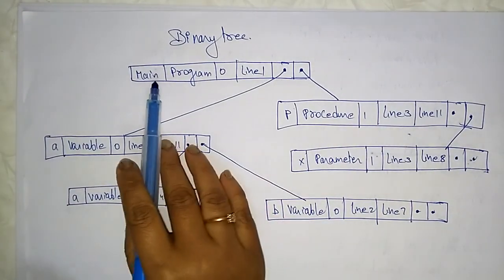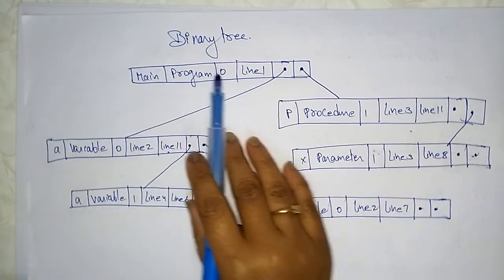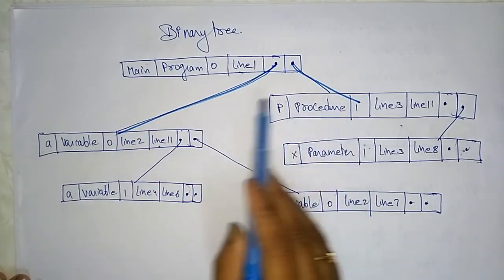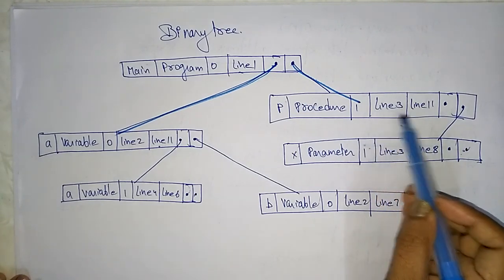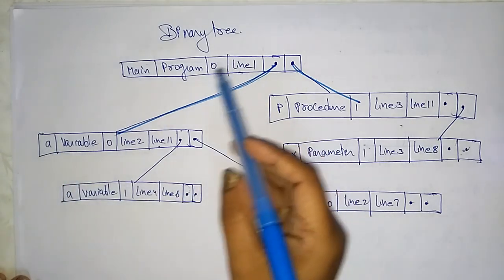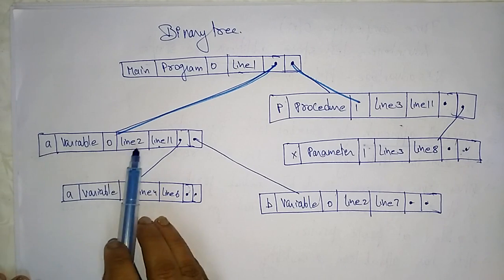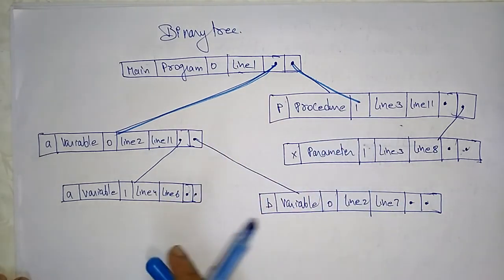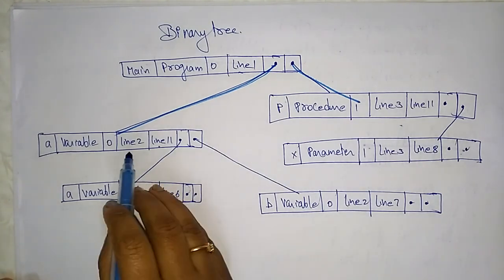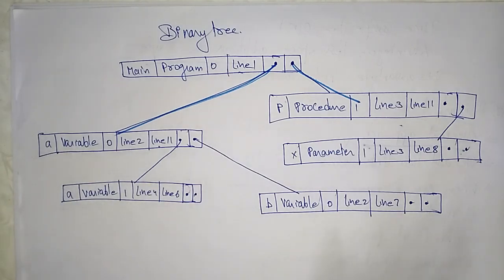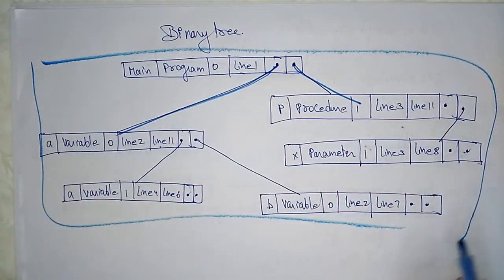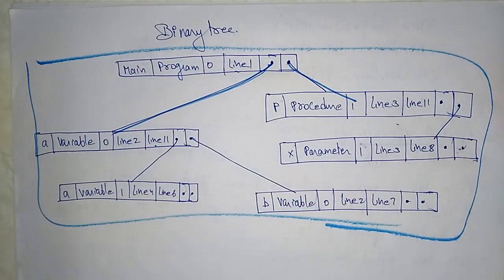This binary tree has alphabetic accessibility. For example, in the main program, variables are declared at various lines — a variable at line two, a variable at line four, and so on. The procedures span from line three to line eleven. Variables are accessible within their scope ranges, such as from line two to line four or line four to line six. This is how the symbol table of a particular program is stored in the form of a binary tree.